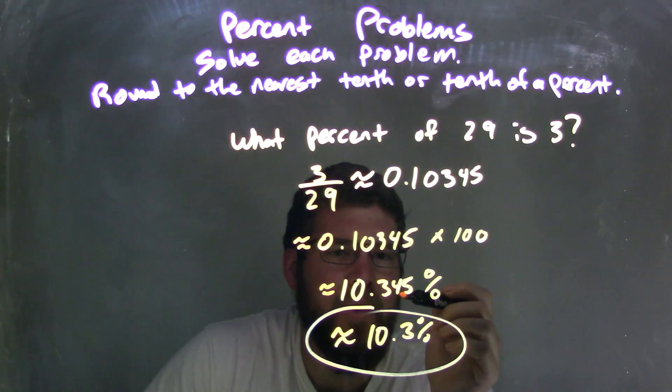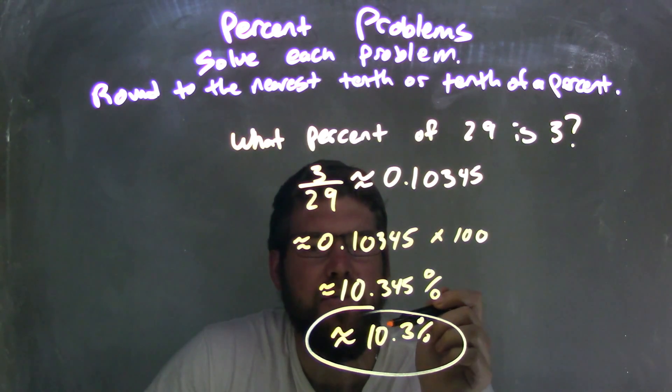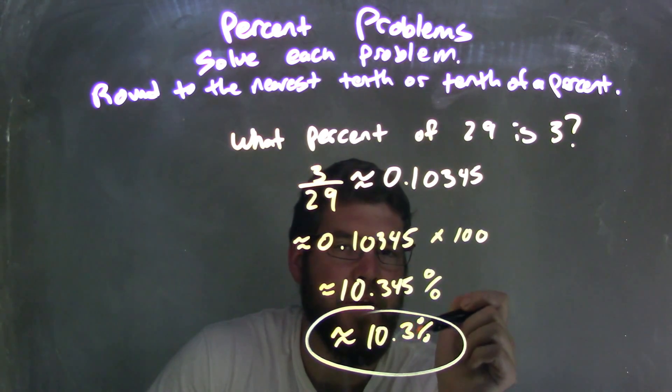I looked at the 3, which was right above the 4. Since the 4 is under 5, the 3 stays the same. So I have an approximate final answer of 10.3 percent.